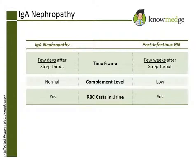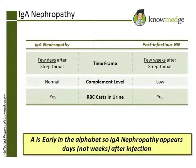We can remember the difference in time frame of IgA nephropathy and post-infectious glomerulonephritis with the following mnemonic: A is early in the alphabet, so IgA nephropathy occurs early — as in days rather than weeks — after an infection.